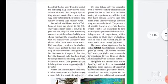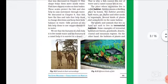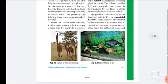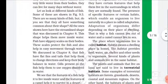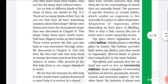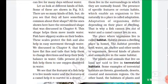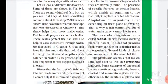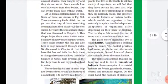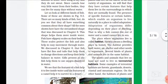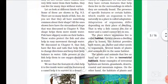Let us look at different kinds of fish. Some of them are shown in Figure 9.3. There are so many kinds of fish, but do you see they all have something in common about their shape? All the ones shown here have the streamlined shape that was discussed in Chapter 8.